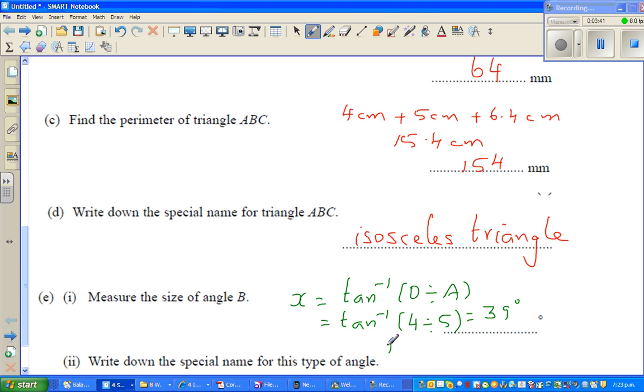Angle B is 2X, which is 2 times 39, which is 78 degrees. So this angle B would be 78 degrees. How I got 78 is 2 times 30 is 60 and 2 times 9 is 18. 60 and 18 is 78.